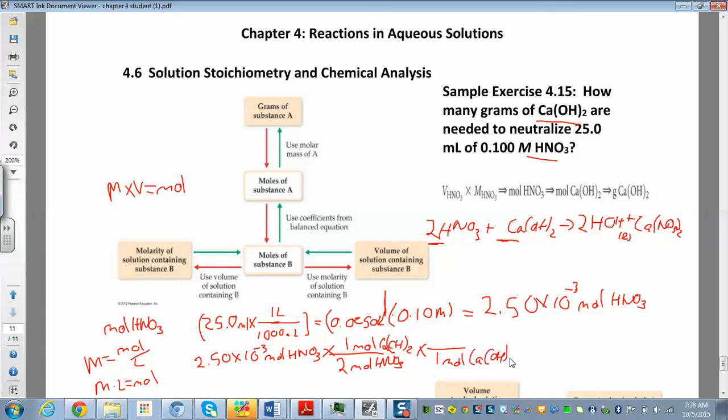I'm going to have 1 mole of calcium hydroxide on the bottom. Then you find the molar mass. You can pause the video and find the molar mass of calcium hydroxide if you want to. Calcium hydroxide is 74.1 grams.